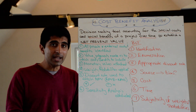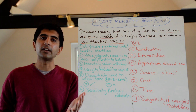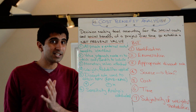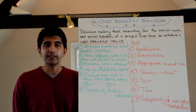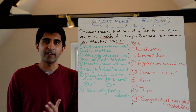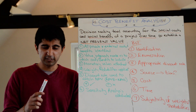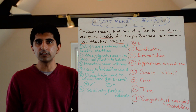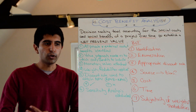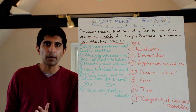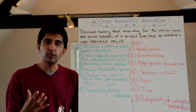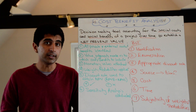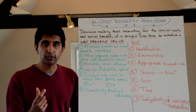The next stage — stage three — is that monetary values are attached to these costs and benefits. Now some of these costs, especially the negative external costs, are very difficult to put monetary values on. There are methods like shadow pricing, cost of compensation, revealed preference, cost to local residents, and lost output. These different measures can be used to put monetary values on negative externalities, depending on what the external cost is.